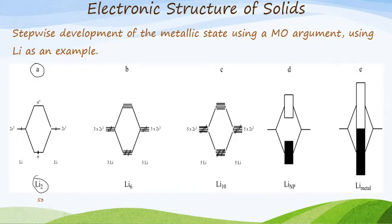Now, what if we take six lithium atoms to form lithium 6? Three lithium atoms on the left and three lithium atoms on the right, each having one 2s electron. Combining them all together, we put all the 2s orbitals together with the sigma and sigma star orbitals stacked in lines. We then have the three electrons from here and three electrons from there, giving us six electrons into those bonding orbitals.